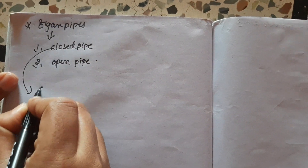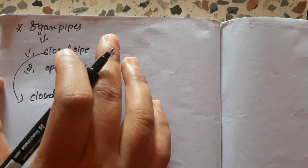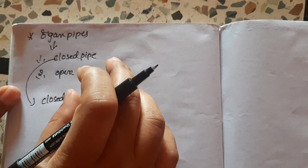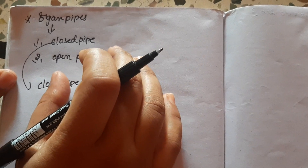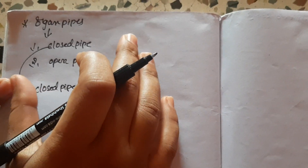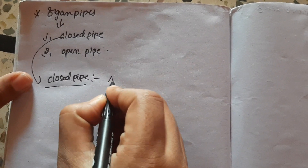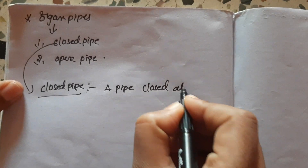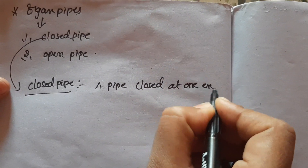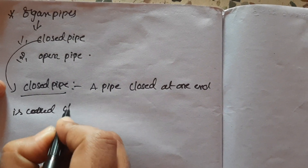So let me tell you about the closed pipe. Organ pipes are used as musical instruments. We have to discuss the sounds and the frequency. A pipe closed at one end is called a closed pipe.